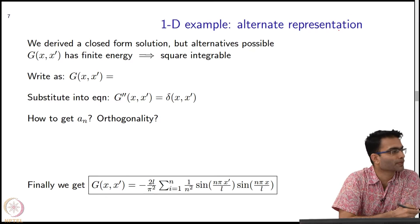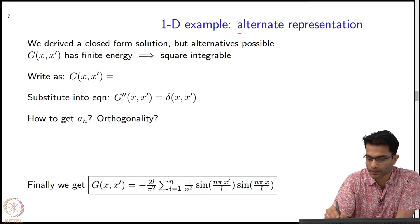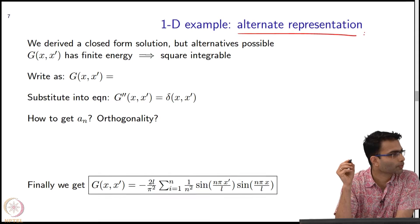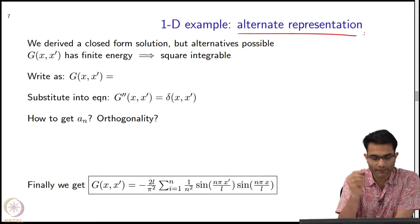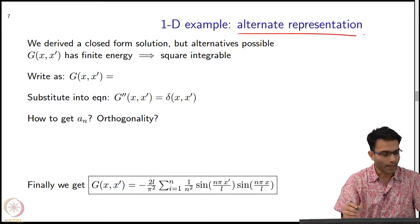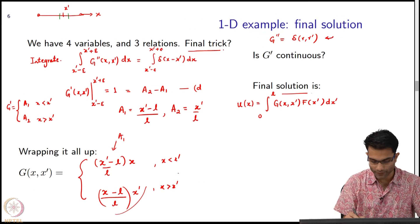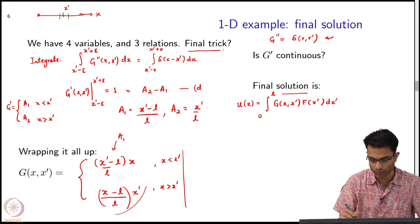Now, it turns out this is an interesting thing about impulse responses—that there are alternate representations also possible. What we derived was a closed form solution, and moreover, if I want to plot this function, what will it look like?